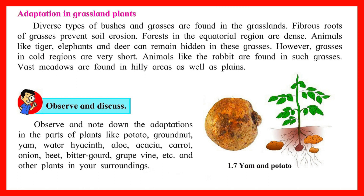Vast meadows are found in hilly areas as well as plains. Observe and note down the adaptations in parts of plants like potato, yam, water onion, aloe, acacia, carrot, onion, beet, bitter gourd, grapevine, etc., and other plants in your surroundings.